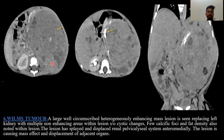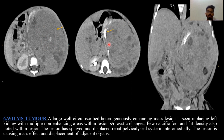Next case: Wilms tumor. There is a large well-defined circumscribed heterogeneously enhancing mass lesion replacing the left kidney, with multiple non-enhancing areas within the lesion, likely cystic changes, few calcific foci, and fat density also noted. The lesion is causing splaying and displacing the renal PCS system anteromedially, and is also causing mass effect and displacement of adjacent organs.